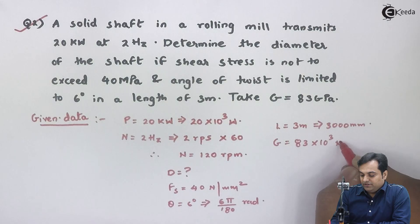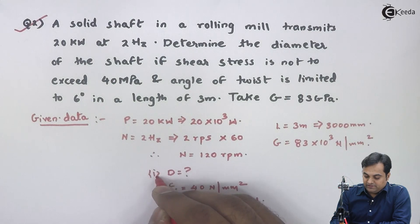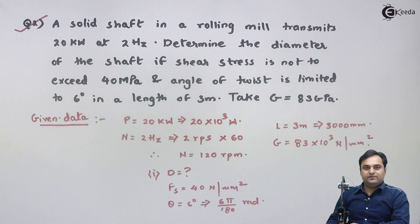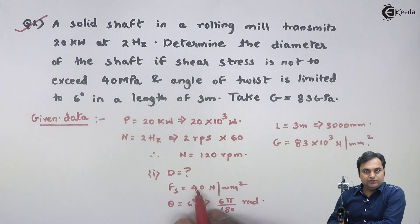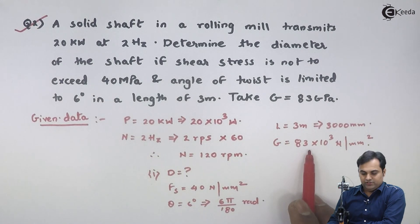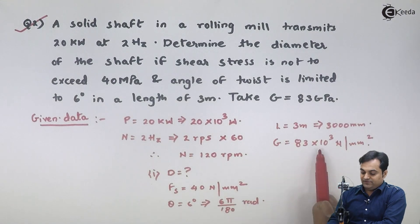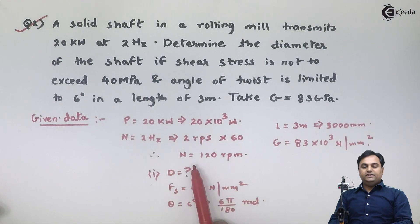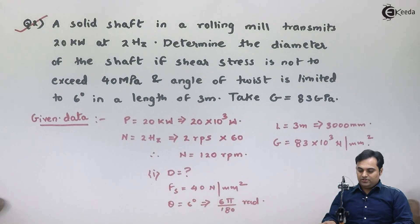Modulus of rigidity G is 83 GPa, which is 83 × 10³ Newton per mm². Since fs and G are both given, we will be using both strength criteria and rigidity criteria. But first, since power and speed are known, let us calculate the torque.